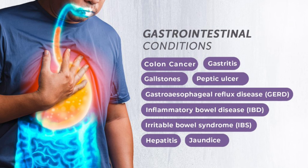On histology, Crohn's disease shows granulomas and increased goblet cells. Ulcerative colitis shows crypt abscesses and decreased goblet cells. In ulcerative colitis, barium enema shows loss of haustra, giving the drain pipe appearance. In Crohn's disease, bowel enema shows Kantor string sign, thorn ulcers, and fistula. Both conditions can present with weight loss and aphthous ulcers, though aphthous ulcers are more common in Crohn's disease.